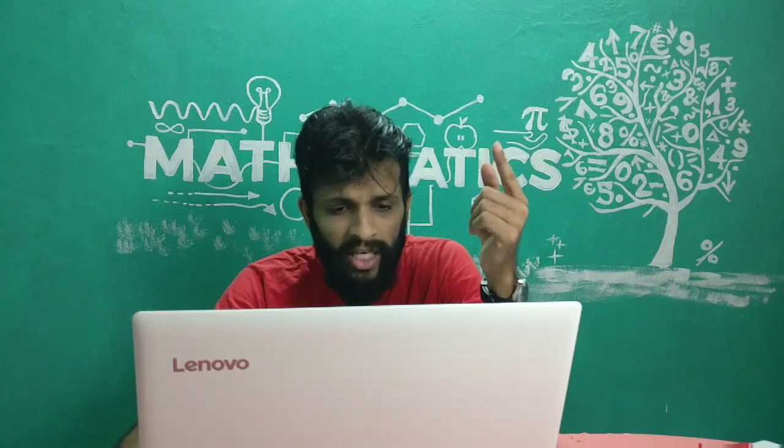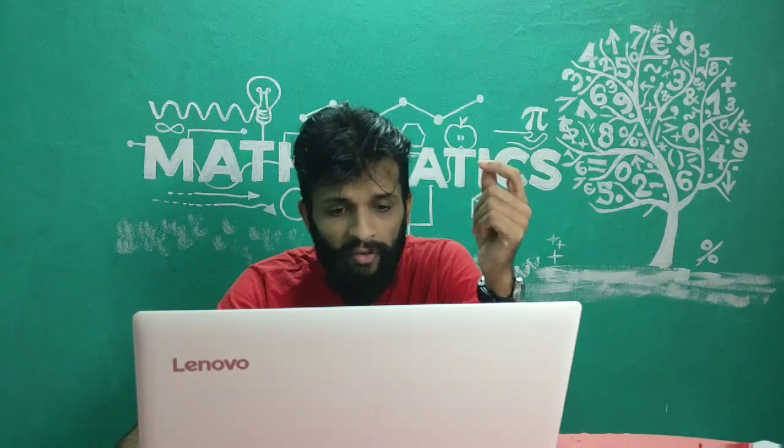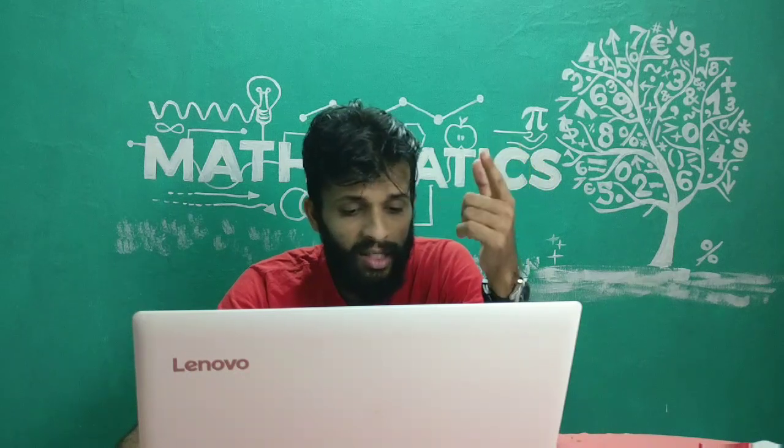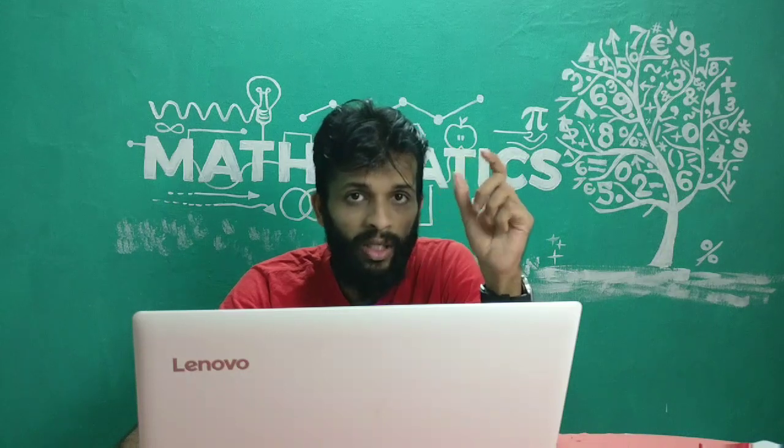The first question is: if x equals 1 and y equals 1 is the solution of ax plus 3y equals 7 and x plus by equals 4, then find the value of a plus b. When you substitute x as 1 and y as 1 in those equations, you get a equals 4 and b equals 3, so a plus b equals 7.